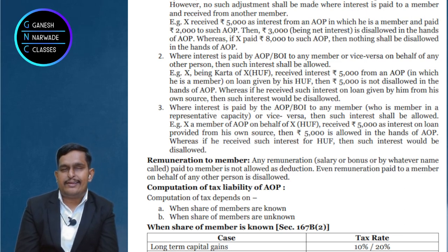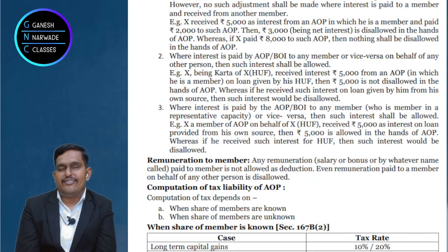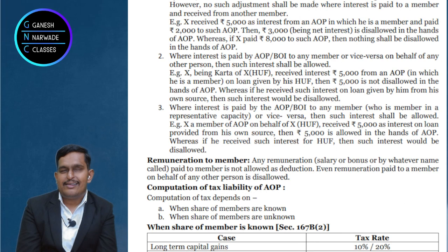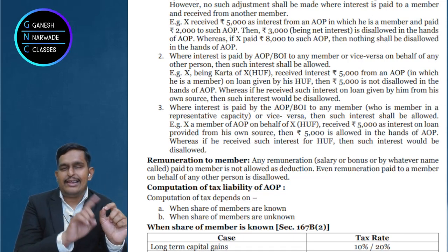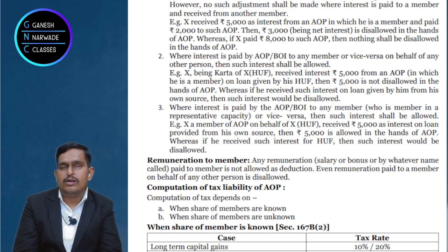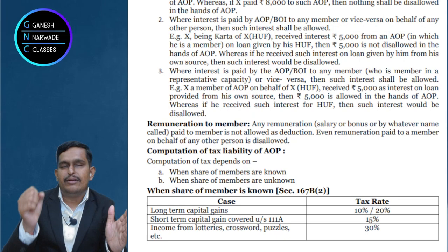The difference is in other incomes — like business income, house property income, other sources income. If member share is known, those other incomes will be taxed based on the member's income. So the AOP's tax rate will be decided based on what is Ram's income, Shyam's income, Ganshyam's income. Vidya Bharati's tax rate is determined by the individual income of Ram, Shyam, Ganshyam.